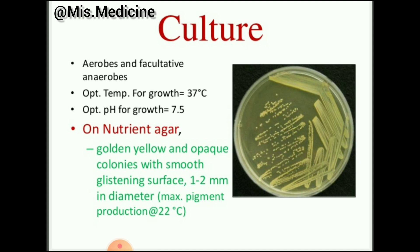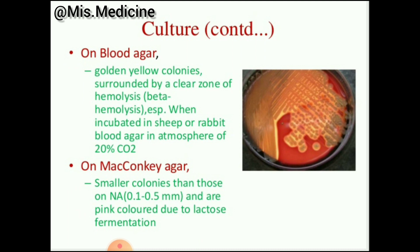For culture, these are aerobes and facultative anaerobes. The optimal temperature for growth of Staphylococcus aureus is 37 degrees Celsius and pH for growth is 7.5. They grow on nutrient agar showing golden yellow opaque colonies with a smooth glistening surface, 1 to 2 millimeters in diameter.